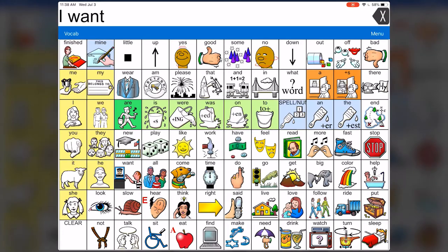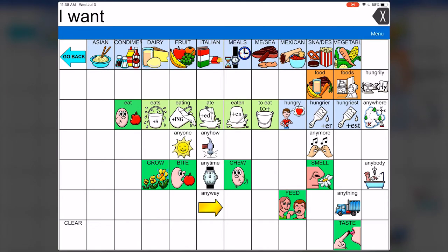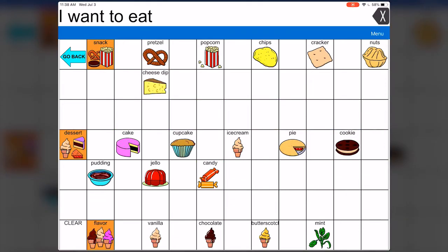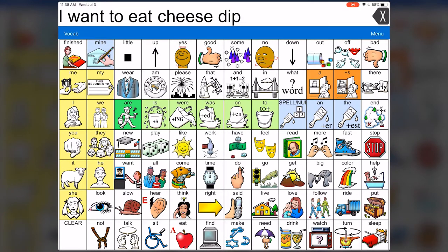So now I can generate a customized message. Cheese dip. I want to eat cheese dip.